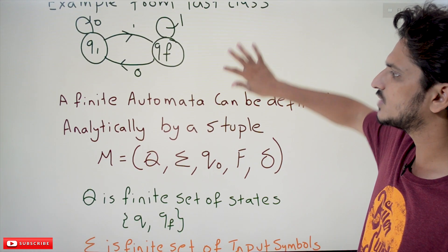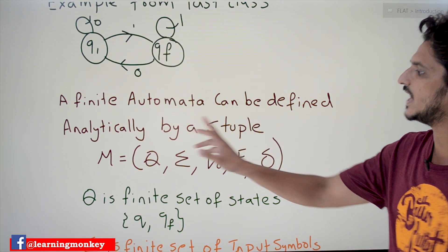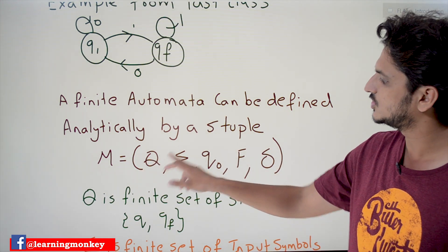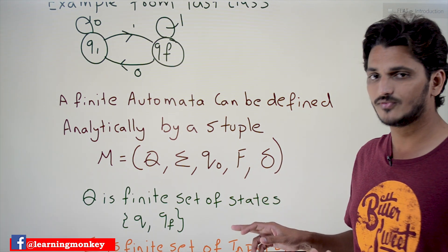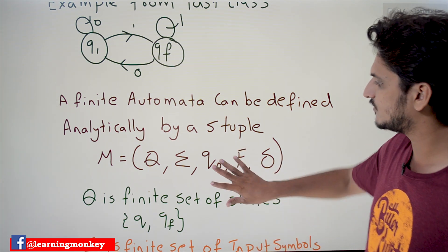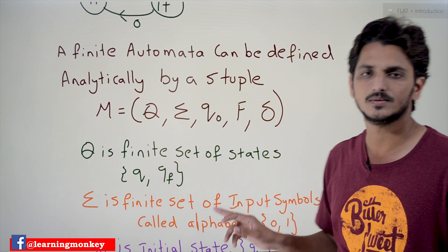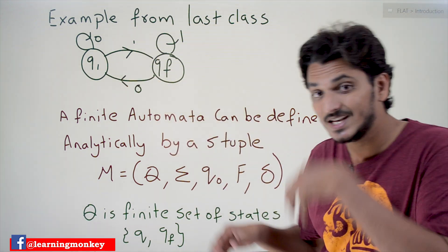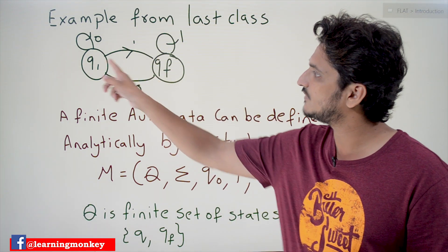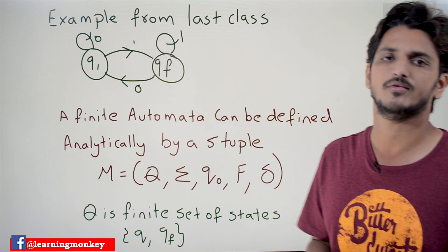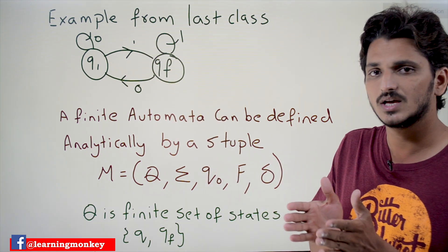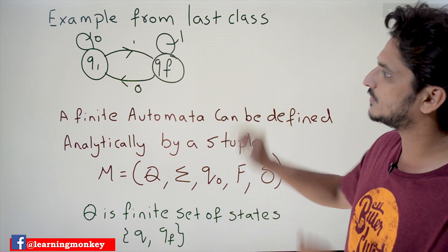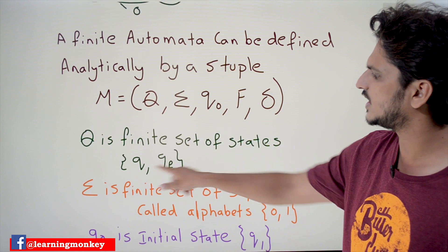A finite automata can be defined analytically by a five-tuple: Q, Sigma, Q-naught, F, and Delta. Let's understand each one. Q is the finite set of states. In our example we have two states: Q1 and QF. So Q means the finite set of all states present in our finite automata.